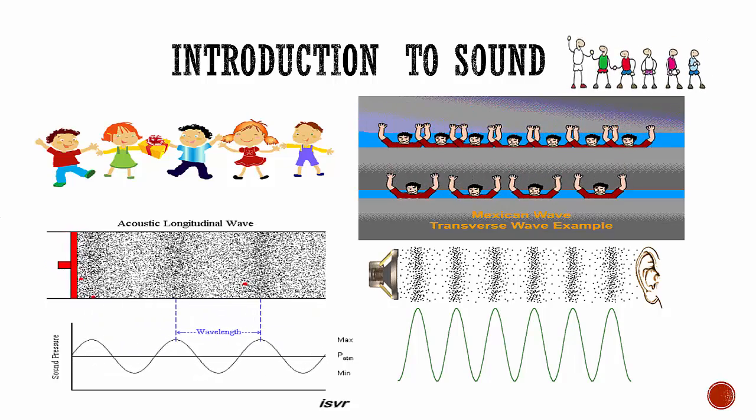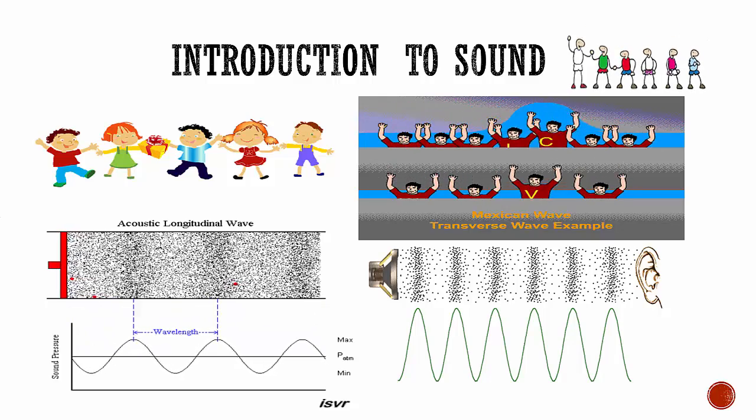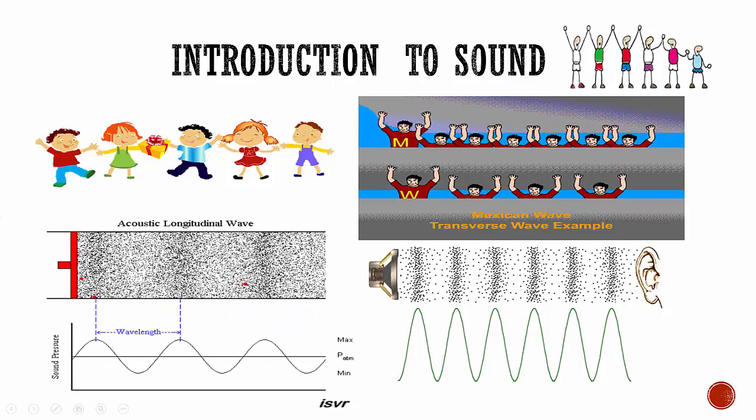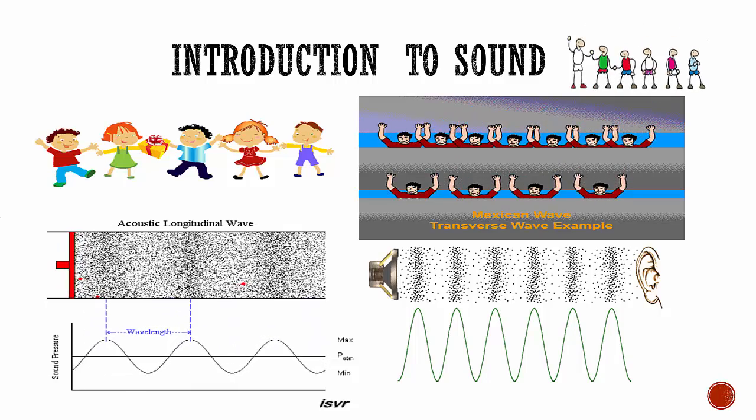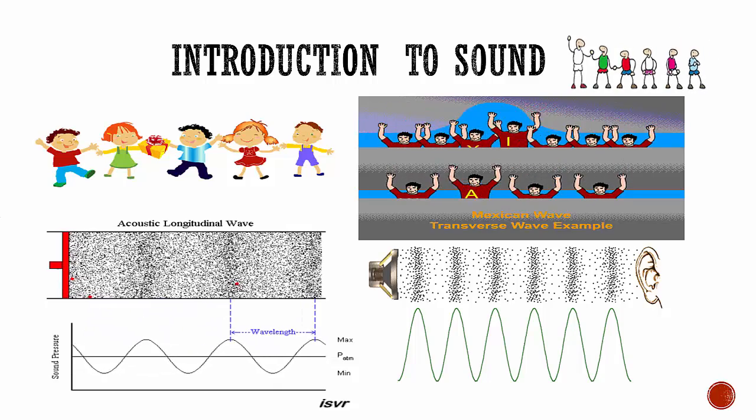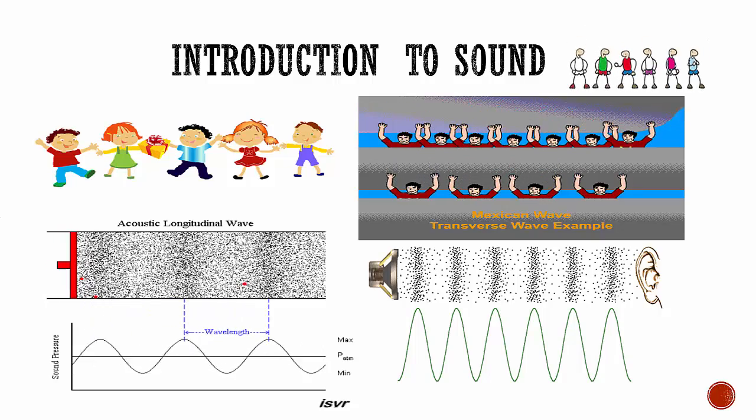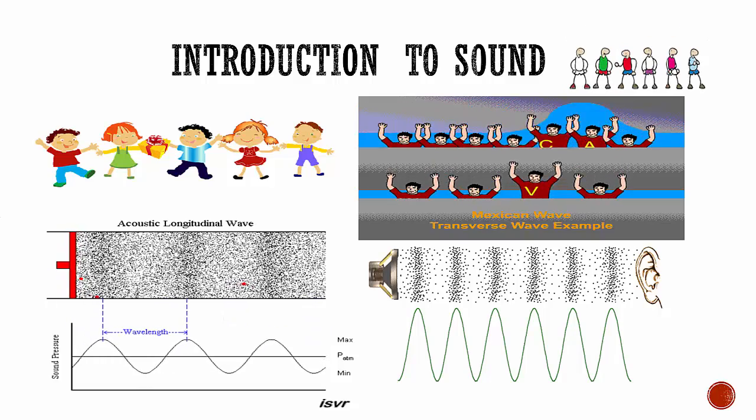With each forward motion, the air molecules pulse outward, pushing other air molecules and crowding them together. With each backward motion, the molecules get less crowded. At some places they get crowded and at some places they're less crowded. So this traveling vibration is called a sound wave.